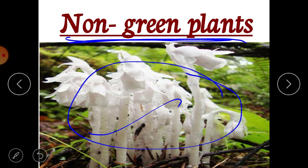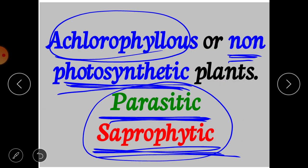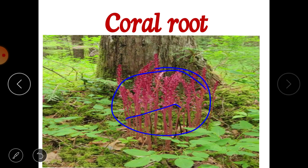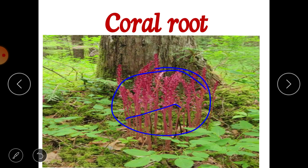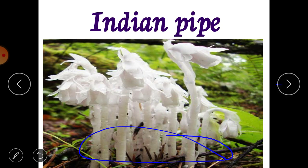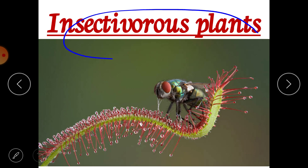So, non-green plants have no chlorophyll and that's why they are called achlorophyllous or non-photosynthetic plants. They depend either on living organisms or on dead and decaying material. If they depend on living organisms they are called parasitic, and if they depend on dead and decaying material they are called saprophytic. Cuscuta is an example of a parasitic plant, and Indian pipe plant and coral root are examples of saprophytic plants.